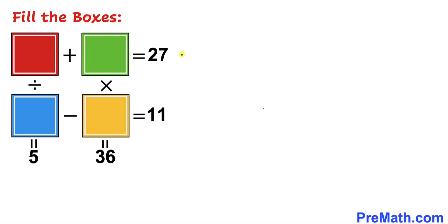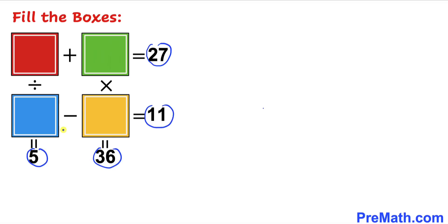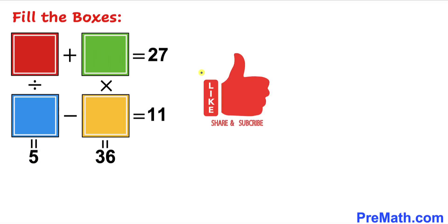Welcome to Pre-Math. In this video we have four empty boxes along with four mathematical operations. We are going to add, multiply, subtract, and divide such that we get 27, 11, 36, and 5. Please don't forget to give a thumbs up and subscribe. Let's get started with the solution.